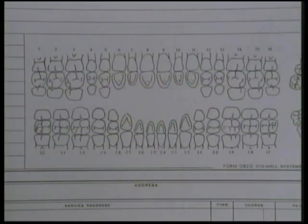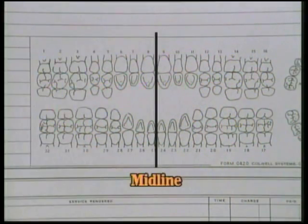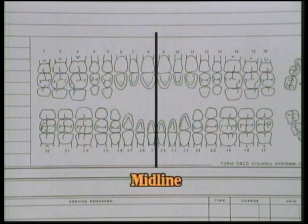Let's review the tooth surfaces on the chart to understand charting. The midline is the line drawn between the intersection of teeth 8 and 9 and teeth 24 and 25. This usually represents the middle of the body.